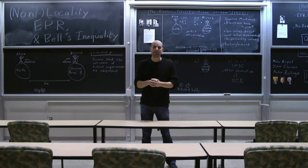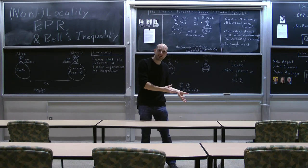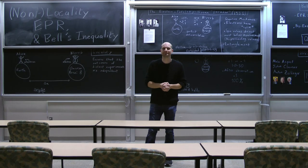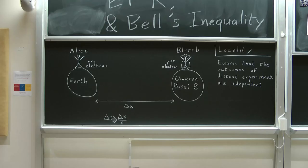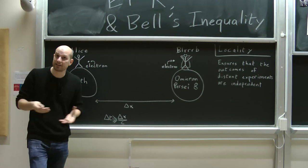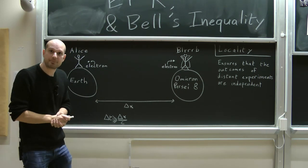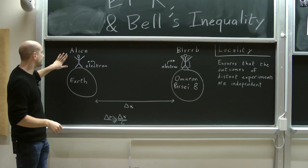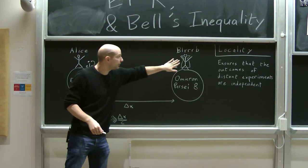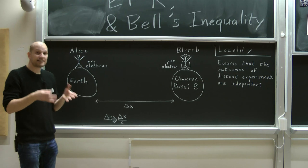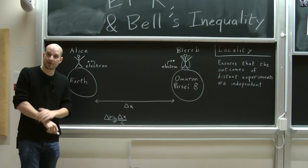What I'll talk about today in this video is how the violation of Bell's inequality translates to a non-local world. So let me start by talking about the concept of locality, and I'll do that with an example. In our example, we'll consider two scientists, Alice and Blurb.